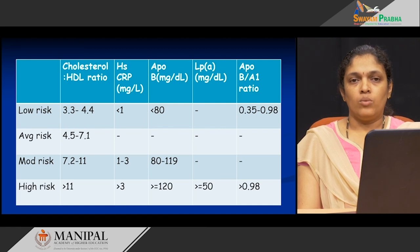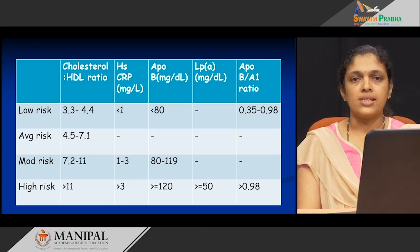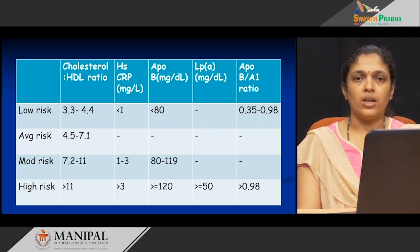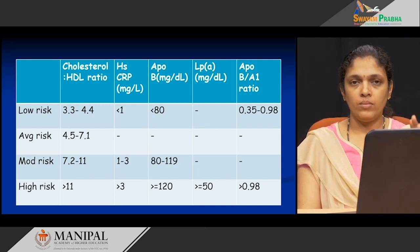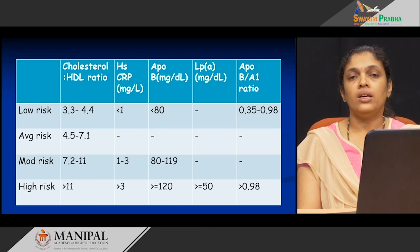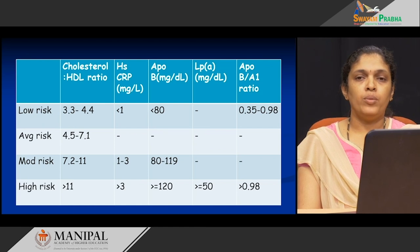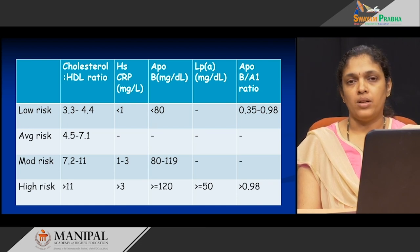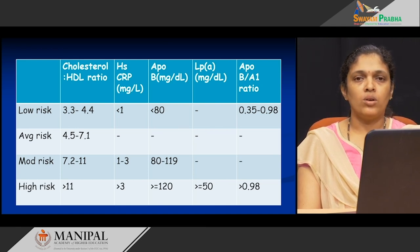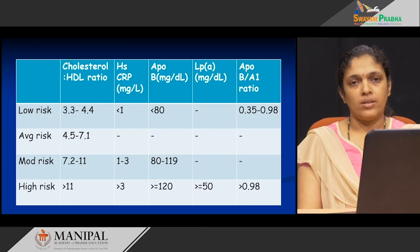To summarize what we learned today: first, we looked at what is the lipid profile and the tests that are part of it — cholesterol, triacylglycerol, LDL, HDL, VLDL. To extend this lipid profile, we add parameters like apolipoproteins, high sensitivity C-reactive protein, lipoprotein(a), and the ratio of apo B to A1. We also looked at whether a fasting or non-fasting sample is preferred — a fasting sample is needed for chylomicron levels, unlike total cholesterol and HDL cholesterol where a non-fasting sample can be used. With this, I thank one and all.